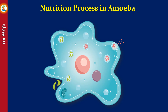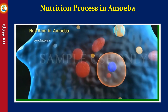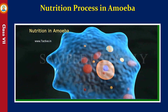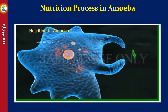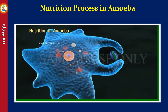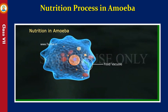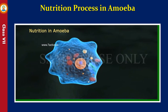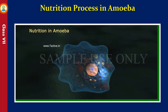Amoeba is a single-celled microscopic organism with no fixed shape. It has finger-like projections called pseudopodia, which are used to catch food. Pseudopodia fuse over the food particle, forming a food vacuole inside the amoeba. Inside the food vacuole, complex substances are broken down into simple substances. These simple substances then diffuse into the cytoplasm, and the remaining undigested material is moved to the surface of the cell and thrown outside.